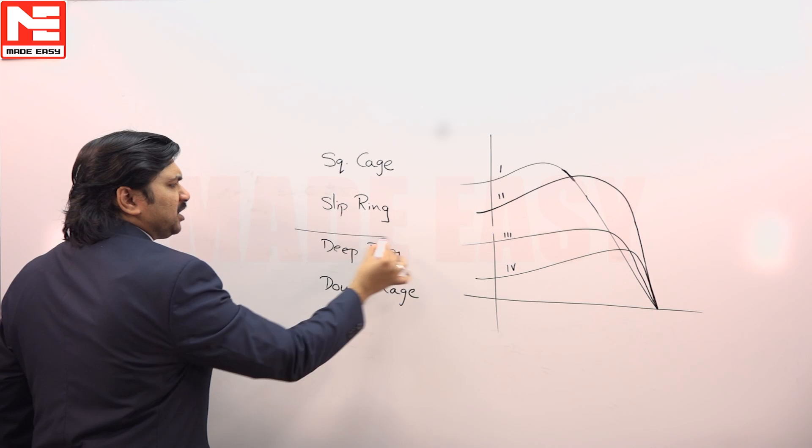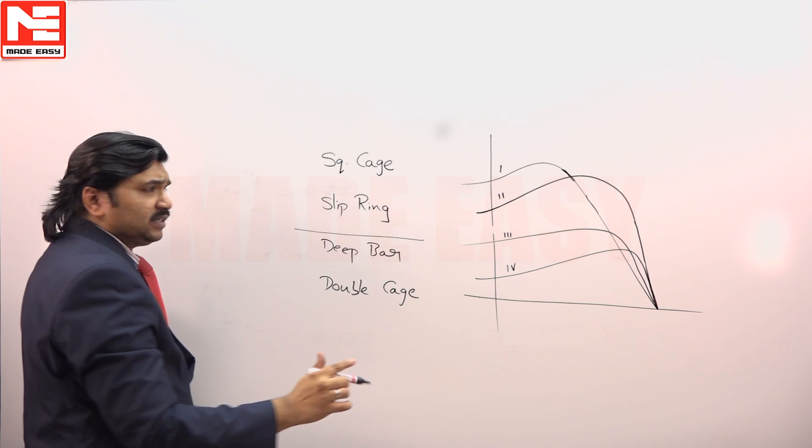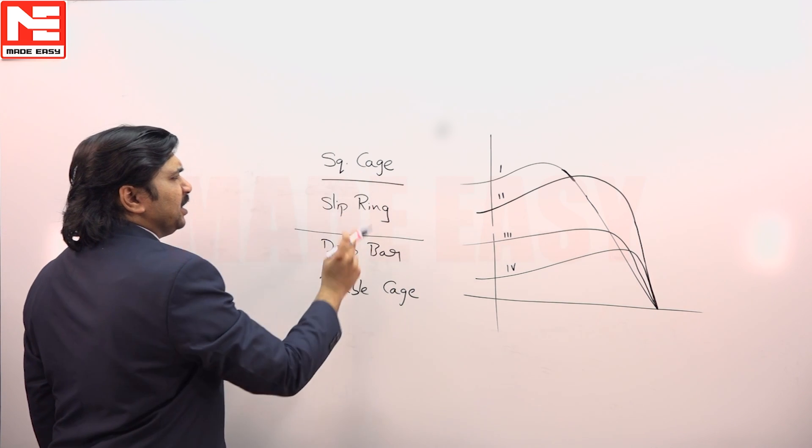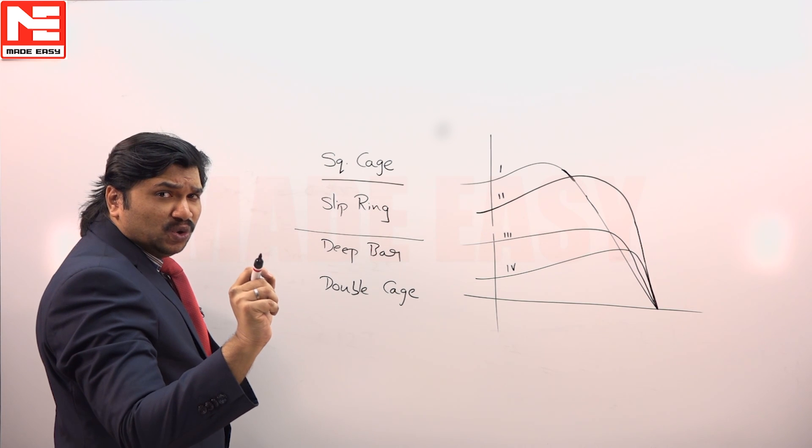First, these two are special constructions, these two are normal. The basic motor is squirrel cage type. The basic drawback of a squirrel cage motor, it has low starting torque.